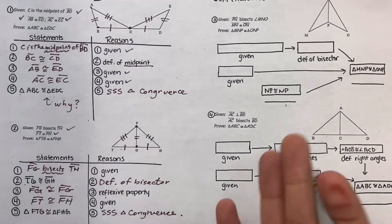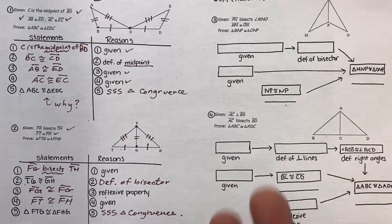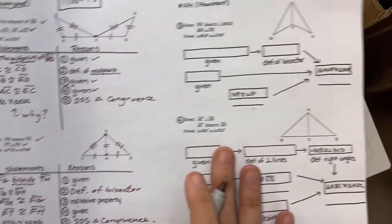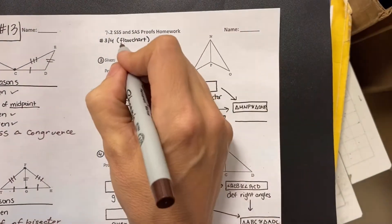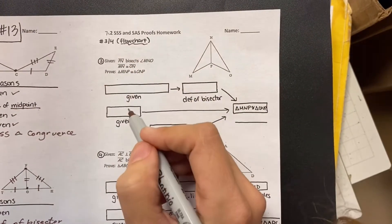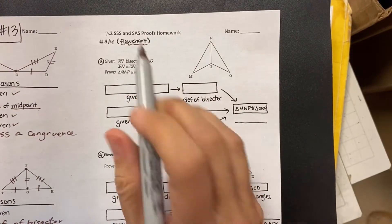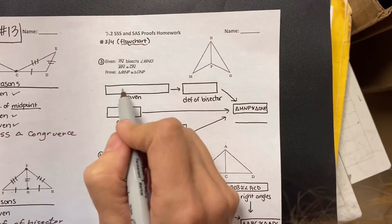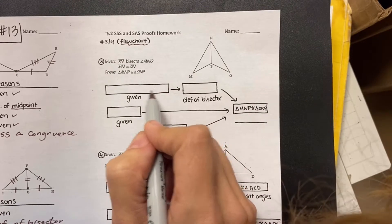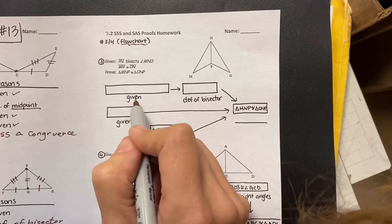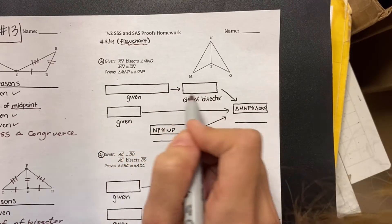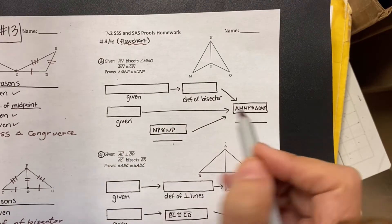Now, what's another way we could show our reasoning steps? That's in a flowchart. So instead of a two-column proof, there are still two things: I put my statement in a box and then I give my reason underneath. That's another way to think through my steps.